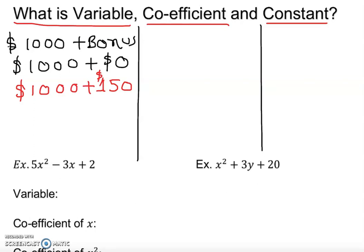Maybe the next day you did more better and you get $200. So notice that every time we have a fixed number which is 1000, which is your fixed salary. On the other hand, bonus gets changed based on your performance. So this bonus becomes your variable.